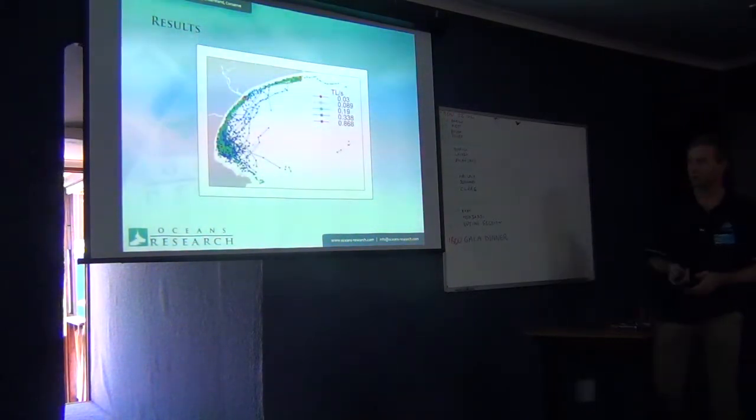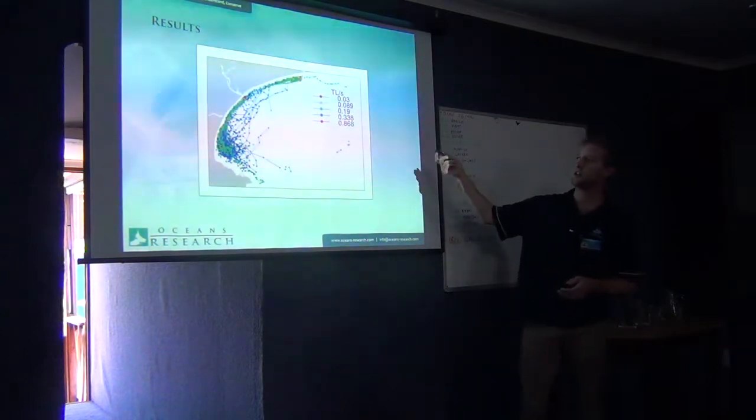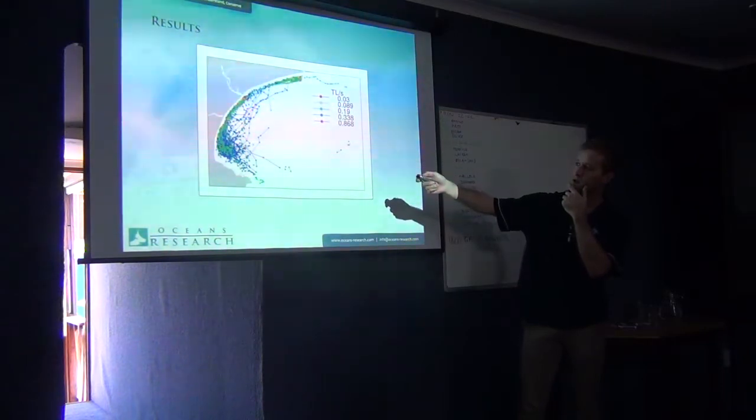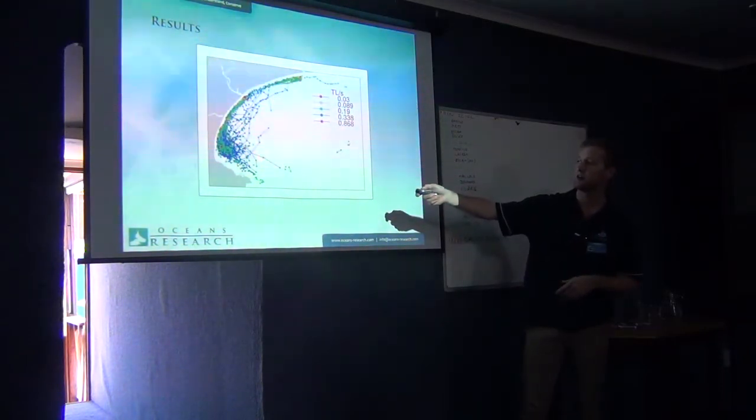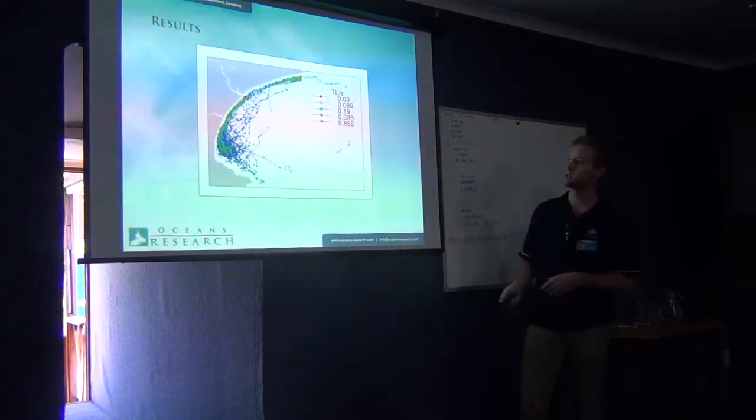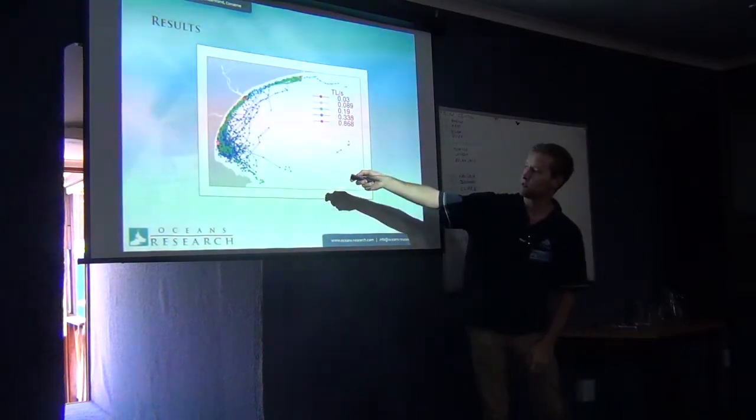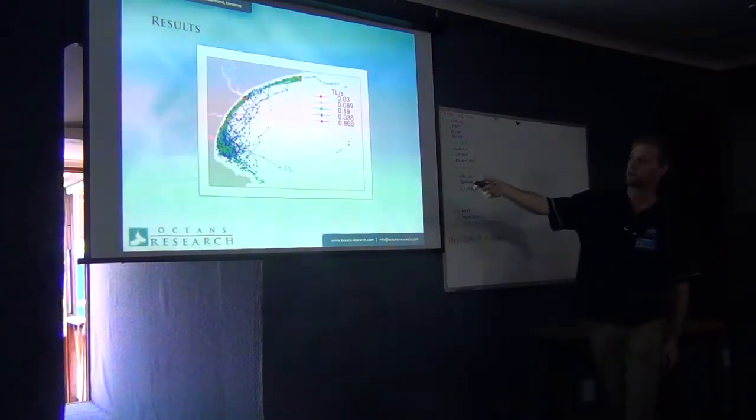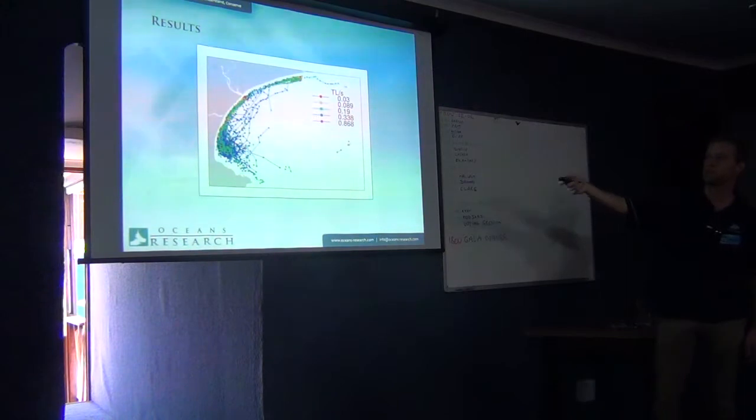We can look at this on a map too. These are the different models observed spatially. You see a lot of this offshore movement here is represented by the blue model, this 0.338 total lengths per second. You get some inshore movements of the green and then these clusters. They're underneath the map, but you get these aggregations at the foraging sites, these red ones here.